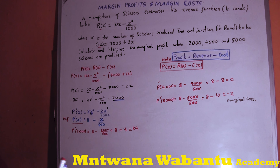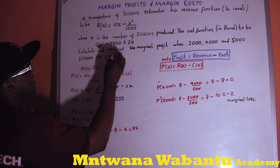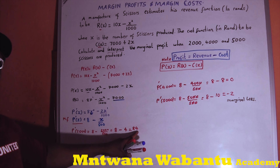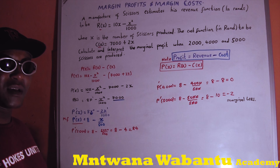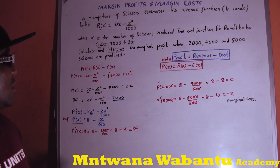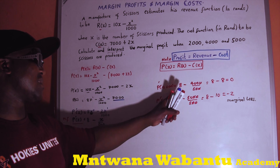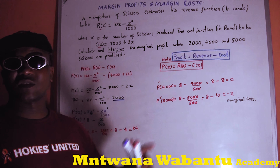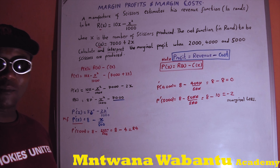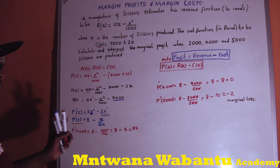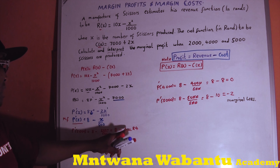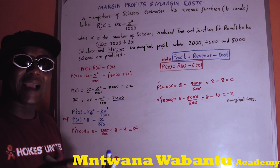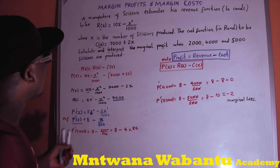Now let's interpret: when I produce 2000 scissors I make a profit of $4. The fewer scissors I produce, the more profit I make. When I produce 4000 scissors — twice the 2000 — there's no profit; that's the break-even point. If I produce more than 4000 scissors I get a loss. So the less the number of scissors, the higher the profit.